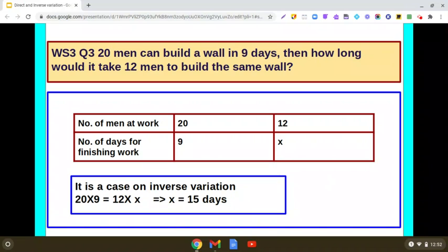Now clearly it is a case of inverse variation, because as you decrease the number of men, then more number of days would be required for finishing the work.